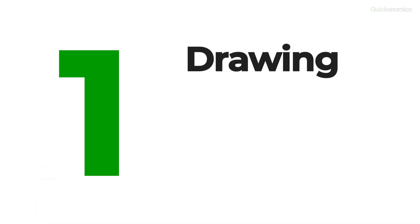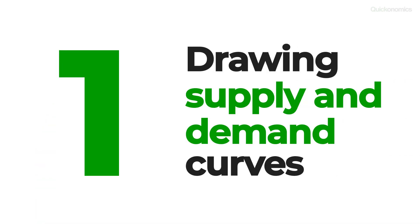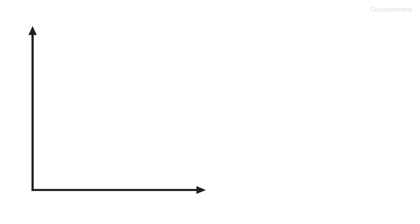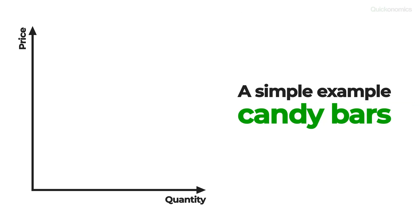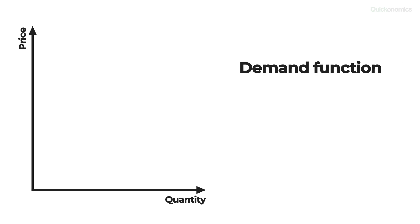Let's start with step one: drawing the supply and demand curves. Calculating producer surplus always starts with a supply and demand diagram that shows the quantity on the x-axis and the price in US dollars on the y-axis. To illustrate this process, we'll use a simple example — the market for candy bars.